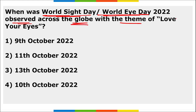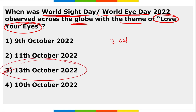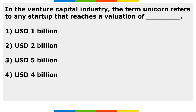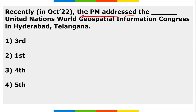World Sight Day (also known as World Eye Day) is observed on 13th October. The theme for 2022 was 'Love Your Eyes.' The first ever World Sight Day was observed in 1998. In the venture capital industry, the term 'unicorn' refers to any startup that reaches a valuation of $1 billion.